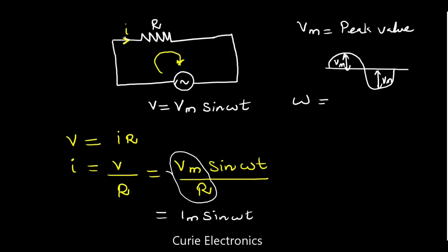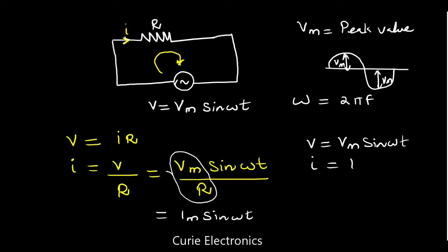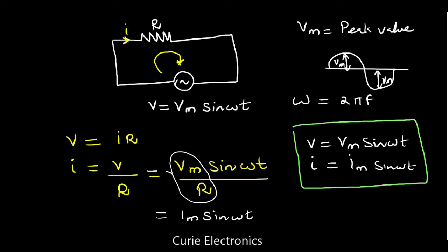Here ω is the angular frequency, or we can say it as 2πf. Now we have both the voltage equation and the current equation. Voltage: V = Vm sin(ωt), and current: I = Im sin(ωt). We will analyze what is the phase relation between them.